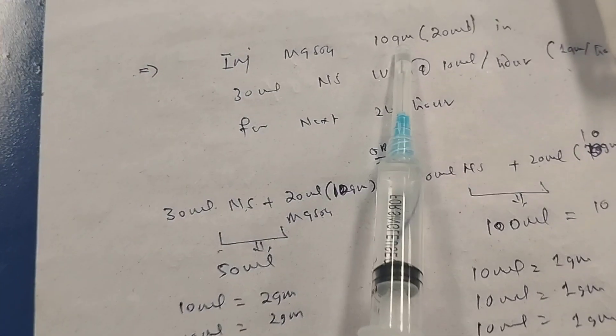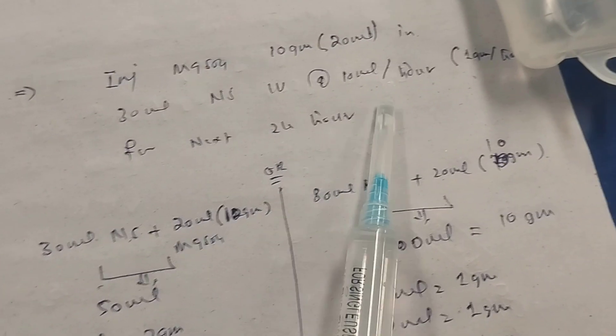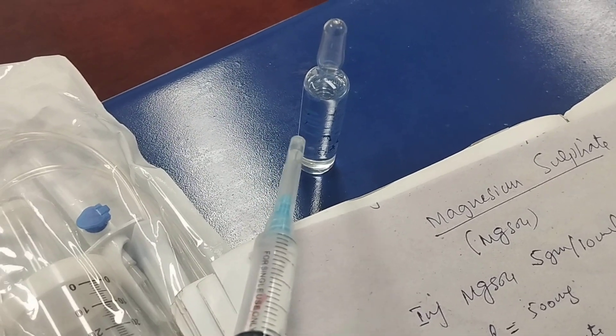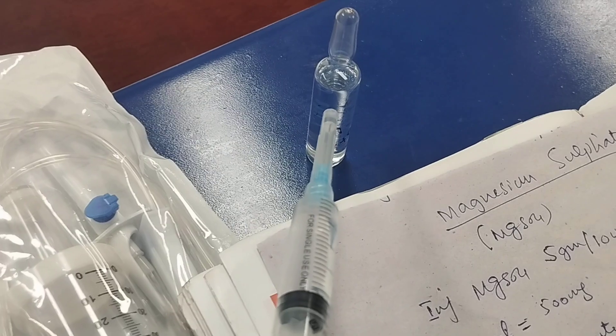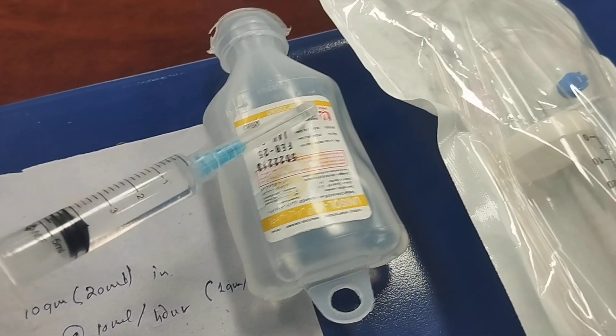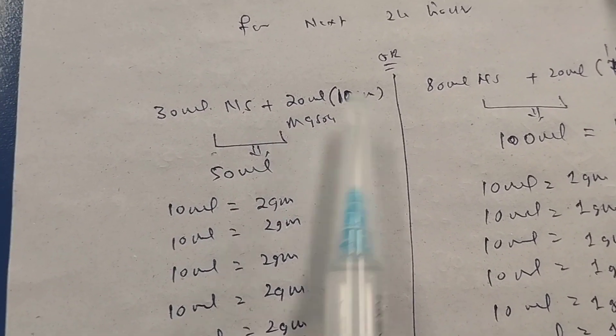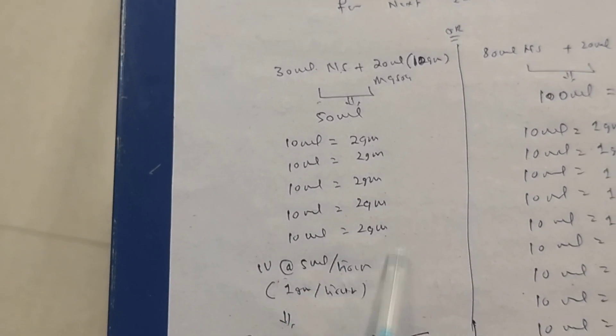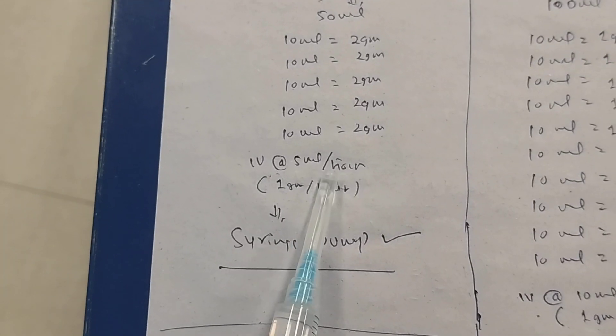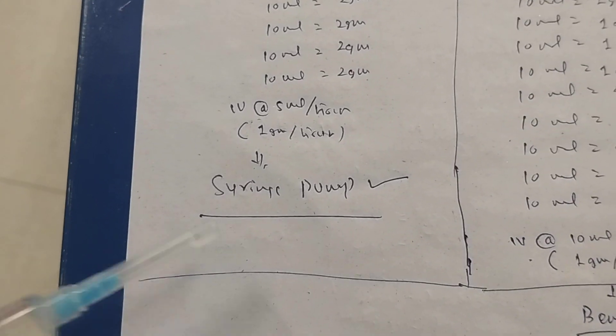To prepare the maintenance infusion using a syringe pump: take 2 ampoules of magnesium sulfate (20 ml = 10 grams) and add 30 ml normal saline, giving a total of 50 ml. In this 50 ml solution, every 10 ml contains 2 grams, so every 5 ml contains 1 gram. Run the syringe pump at 5 ml per hour to deliver 1 gram of magnesium sulfate per hour.